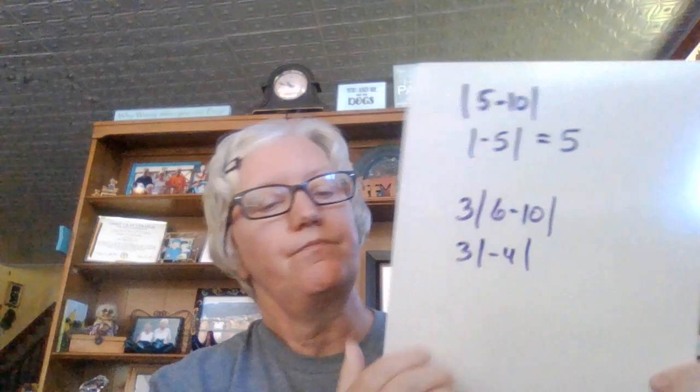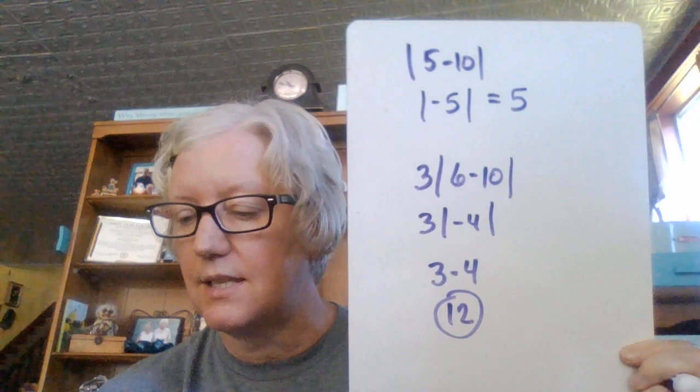Well, six minus 10 is negative four. Then you're going to take the absolute value of negative four, which is four. And then you can finally multiply. Multiplying would be the last thing that you would do.